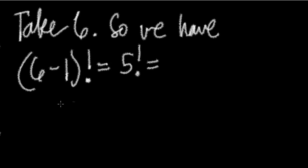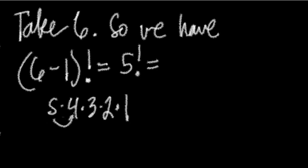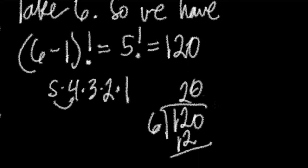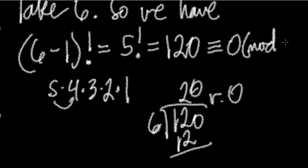5! = 5 × 4 × 3 × 2 × 1 = 120. Now, 120 mod 6: 120 divided by 6 gives us 20 with remainder 0. So 120 ≡ 0 (mod 6).